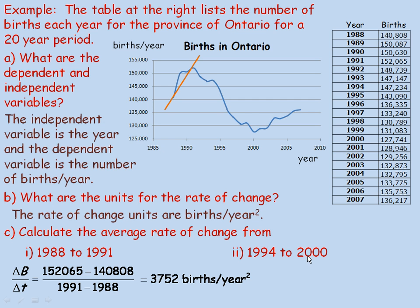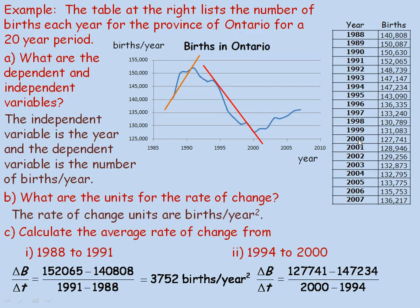From 1994 to 2000, I draw a secant and calculate the rate of change. The year 2000 had 127,741 births and 1994 had 147,234 — dividing the difference by 6 years gives a negative result because births went down. The average rate of change is −3,249 births per year squared. This secant slopes down to the right, giving a negative rate of change, compared to the positive slope from 1988 to 1991. Both are average rates of change between two years.